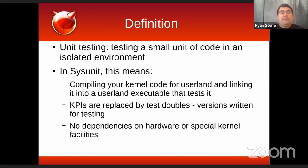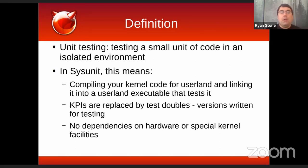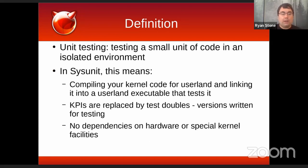Any kernel programming interfaces that your kernel code depended on are going to be replaced by test doubles — versions written specifically for unit testing. Because we've taken this piece of kernel code outside of the kernel and replaced the normal KPIs with test versions, we can really eliminate dependencies on hardware or special kernel facilities, and the test is isolated from everything else.